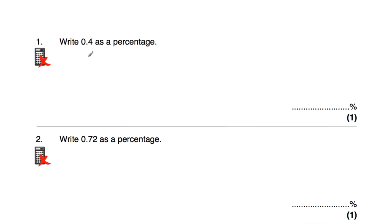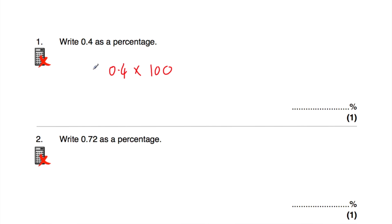Question number one says write 0.4 as a percentage. You may know 0.4 as a percentage automatically — it's 40%. It's quite useful to know that 0.1 is 10%, 0.2 is 20%, 0.3 is 30%, 0.4 is 40%, and so on. But if you've forgotten that, you can take your decimal 0.4 and times it by 100, which means moving the digits two columns to the left. The 4 moves into the ones and then the tens column, giving 40, so the answer is 40%.